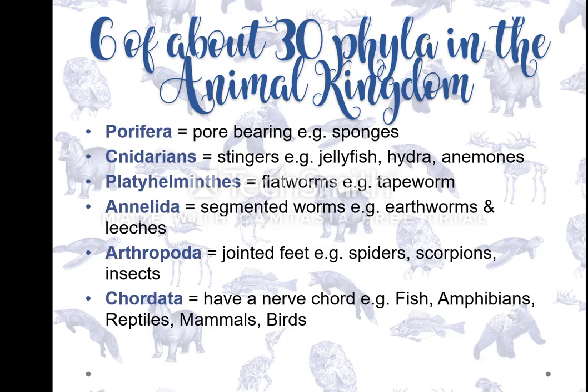Animals all belong to the kingdom Animalia, and then we get kingdom, phylum, order, class, genus, and then species. That is how we name an organism. If you remember from grade 10, any organism has a name with two parts — like Homo sapiens. Homo is the genus, sapiens is the species. A phylum is just one of the groups that we classify different organisms into. Within the kingdom Animalia, there are over 30 groups with different characteristics.